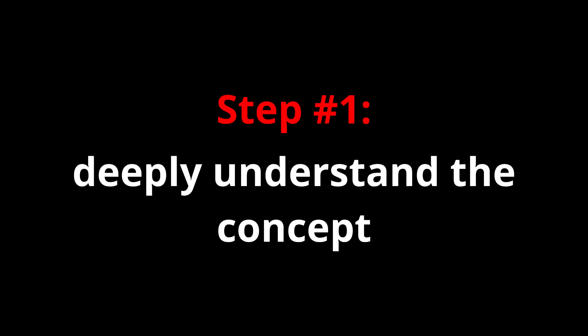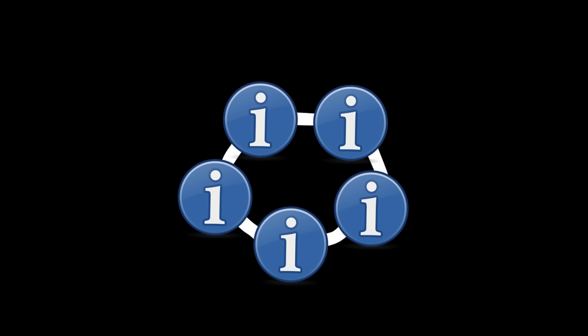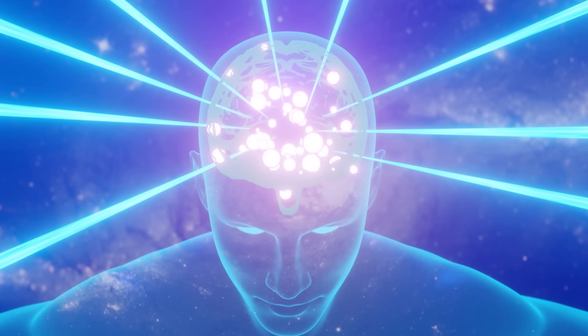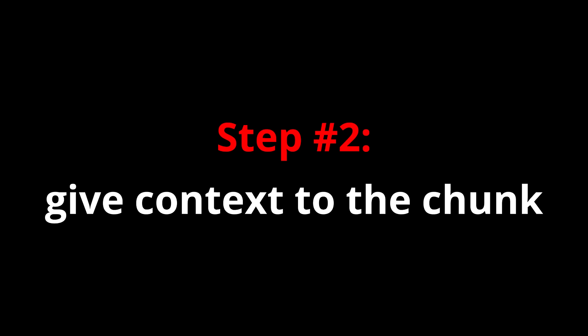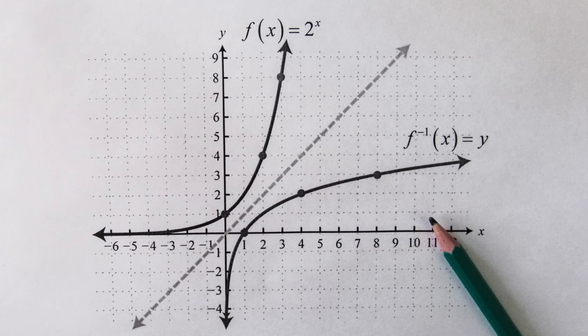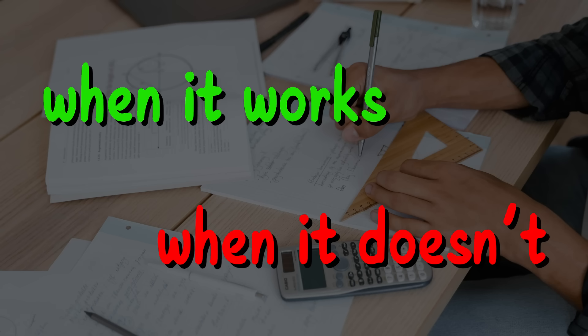So, how do you create a chunk? Well, the first step is to deeply understand the concept. Whatever the idea is, you need to truly understand it before it becomes a chunk. Deep understanding acts like mental superglue. It holds the pieces together and makes them easier to remember and apply. After you master a concept, you have to give context to the chunk. It's not enough to know how to solve a certain type of problem. You also need to understand when that method works, and when it doesn't.